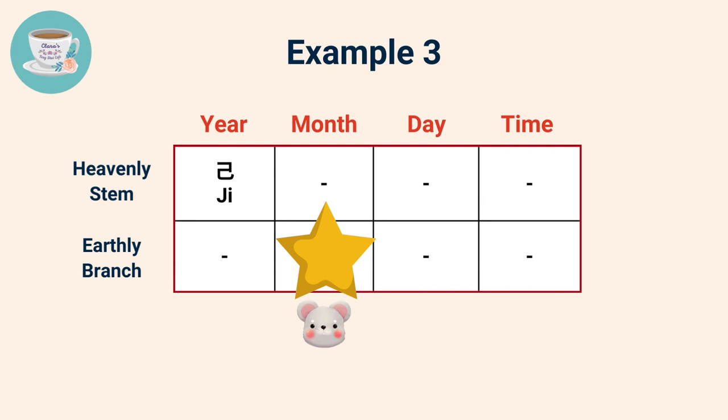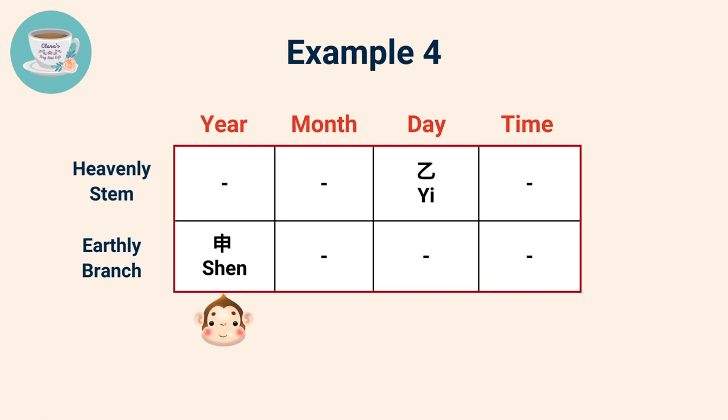Here's another example. The day stem is Yi, which is compatible with Shen. So the monkey is your Nobleman star.